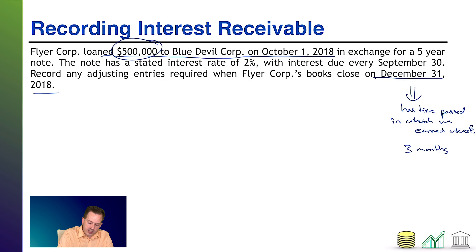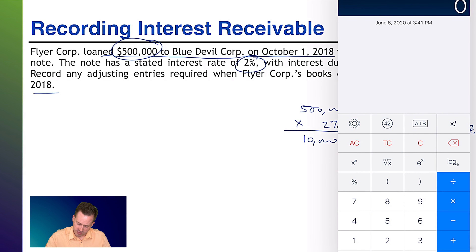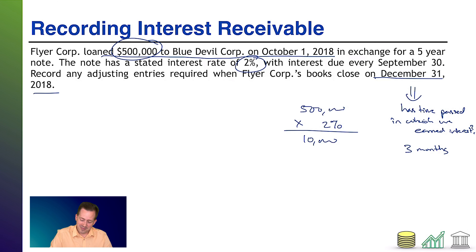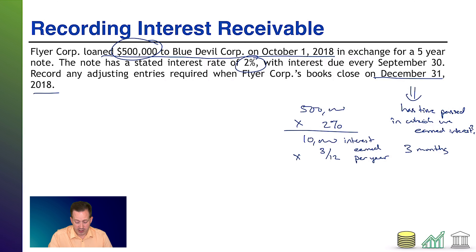We need to figure out how much that revenue is. The principal is five hundred thousand dollars times the interest rate of two percent, which equals ten thousand dollars — that's interest earned per year. But we've only had this note out for three months, so we multiply times three out of twelve months. Ten thousand dollars times three over twelve comes out to twenty-five hundred dollars — that is three months of interest revenue.